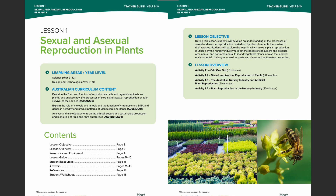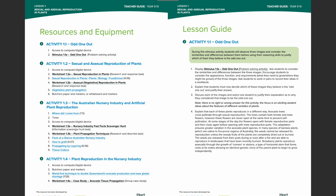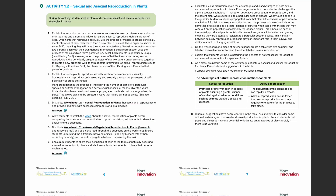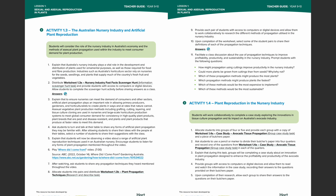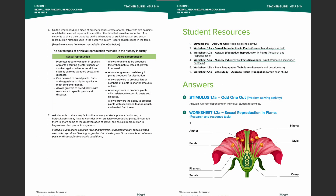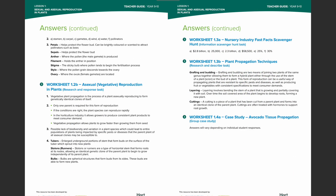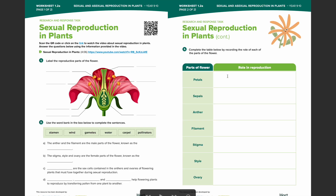During the first lesson of this resource, students will develop an understanding of the processes of sexual and asexual reproduction carried out by plants to enable the survival of their species. Through guided research, multimedia activities, and collaborative tasks, students will explore the ways in which asexual plant reproduction is utilised by the nursery industry to meet the needs of consumers and the wider horticultural industry. Each of the student worksheets contains editable text boxes allowing their completion on student devices or as a series of printed worksheets that can be completed by hand.